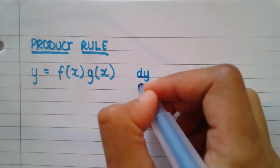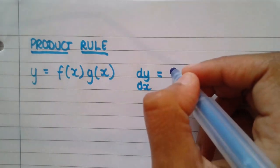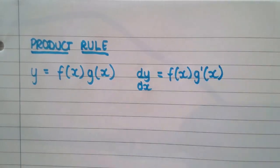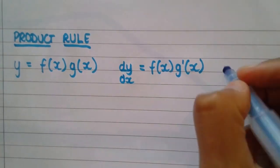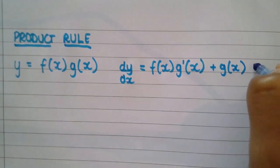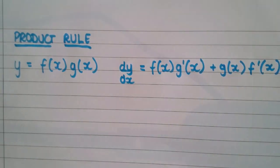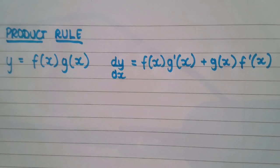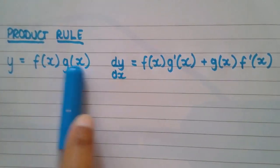then dy by dx, the derivative of that whole function, is f of x times by the derivative of g of x plus g of x multiplied by the derivative of f of x. And we are now trying to prove that that is the derivative of the function where two functions are being multiplied.